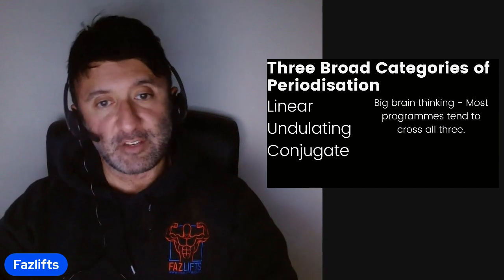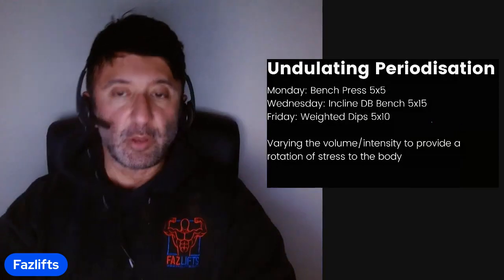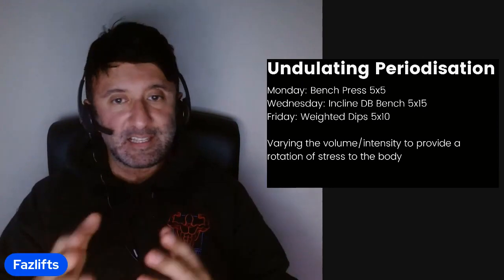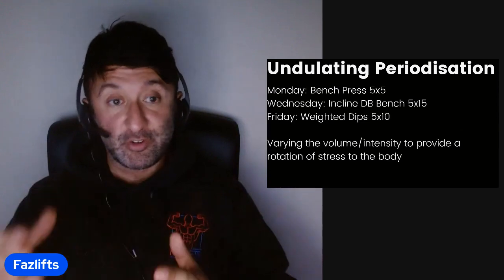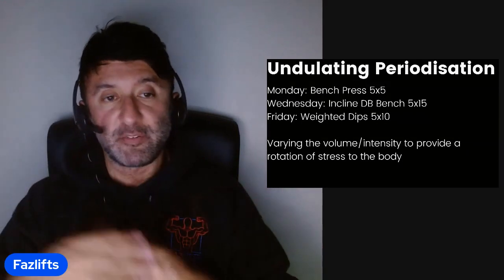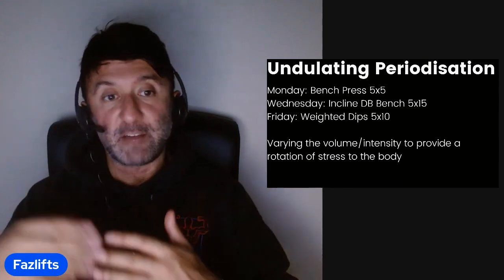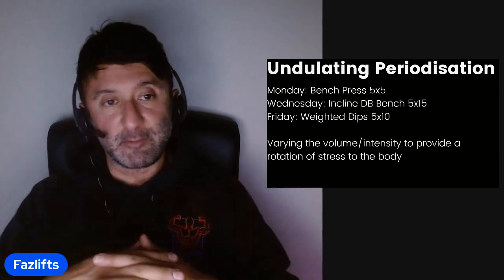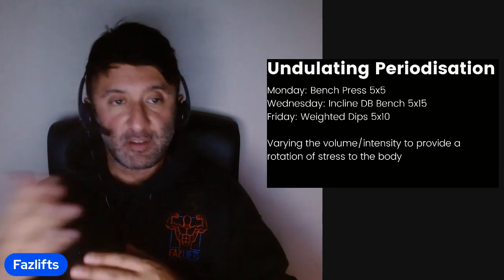Undulating periodization is where you vary the volume and intensity across the week, providing a rotation of stress to the body. For example, three separate chest days: bench press on Monday for 5x5 — heavier work; incline dumbbell bench on Wednesday for 5x15 — lighter work; and weighted dips on Friday for 5x10. This is very much what my Wizard routine leans towards.